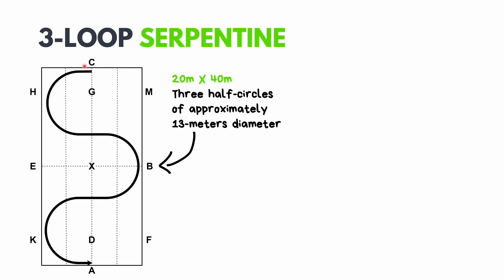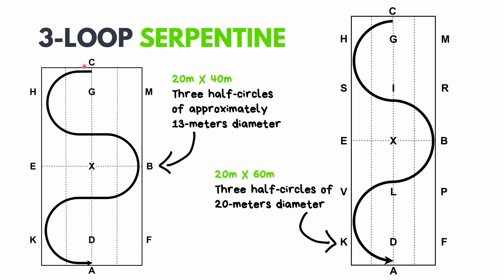Now if you ride this same exercise in a 20 by 60 meter arena, this becomes easier to manage because now you're riding three half circles of 20 meters diameter. Because you've got a 60 meter arena and you're riding three loops, 60 divided by 3 equals 20. So that's three half 20 meter circles.